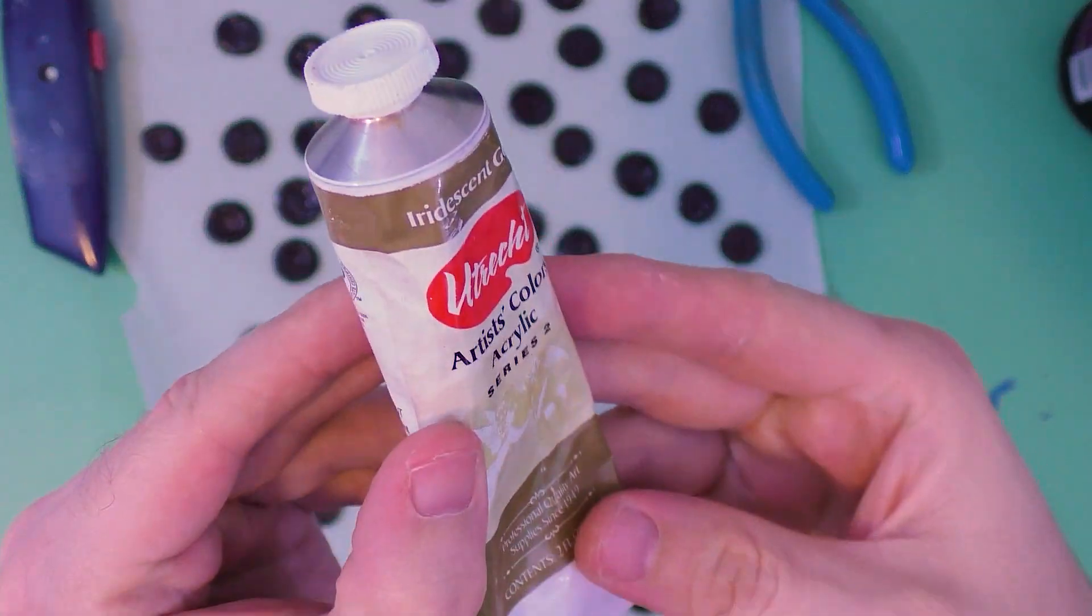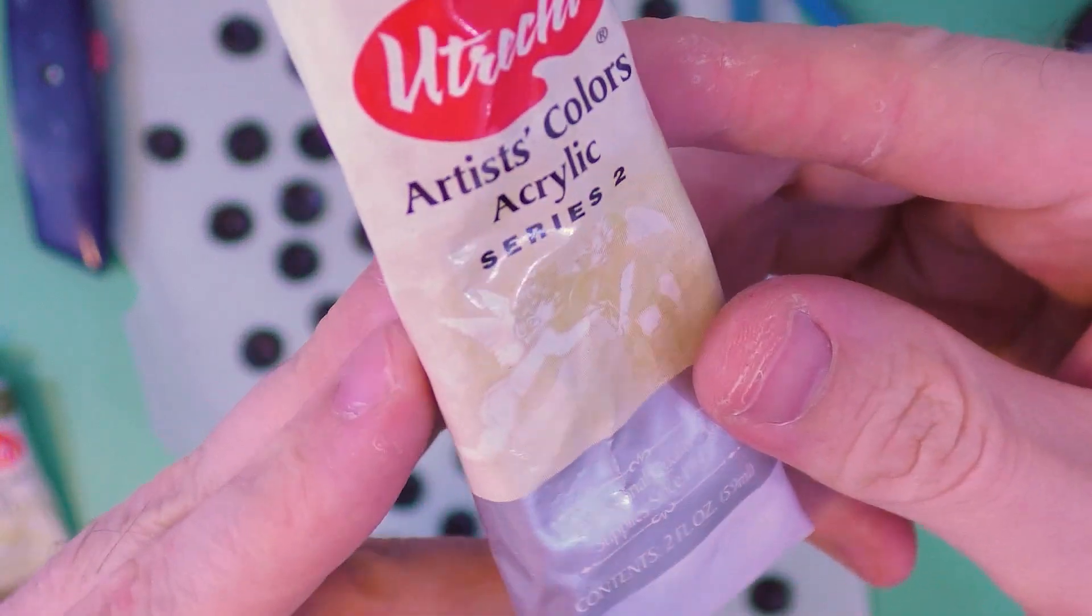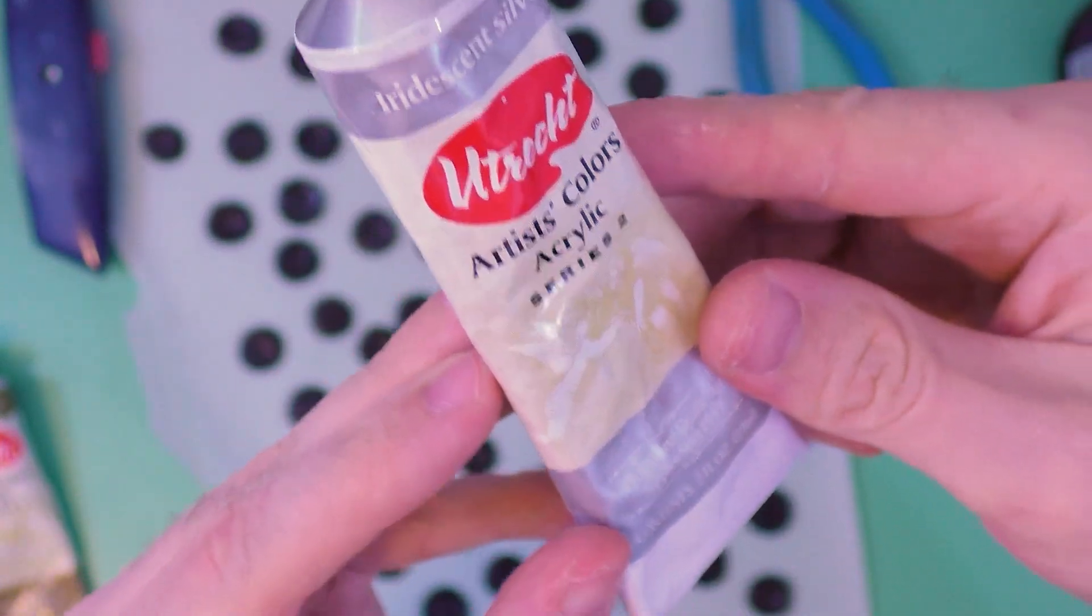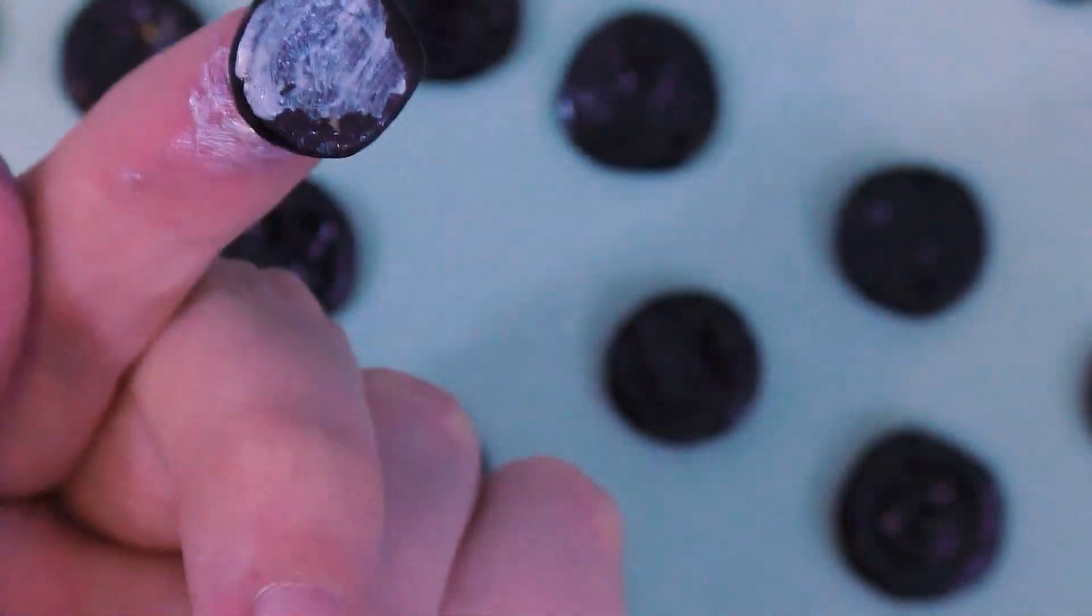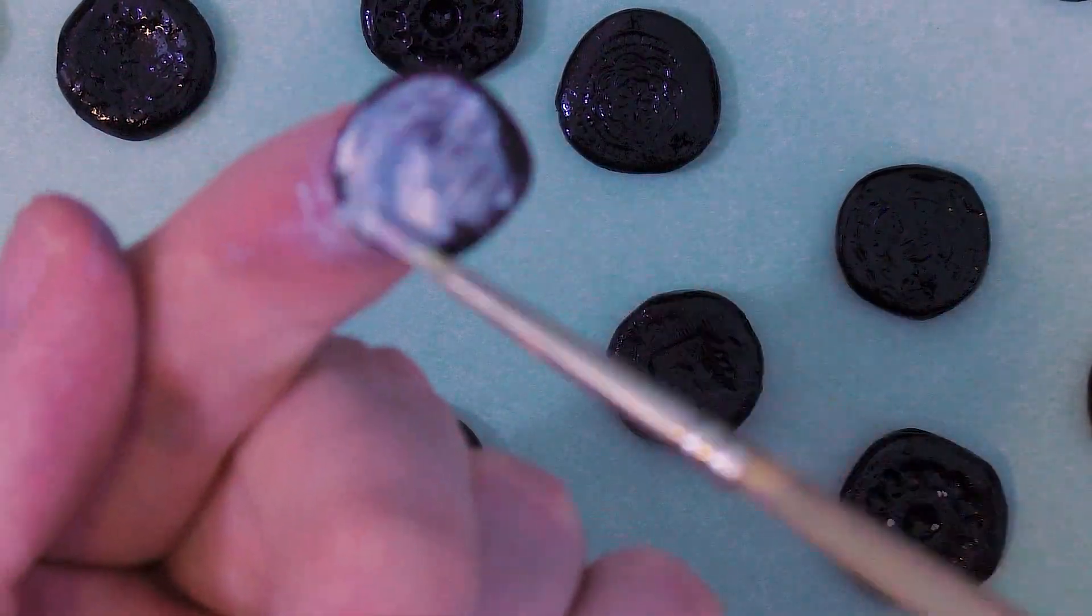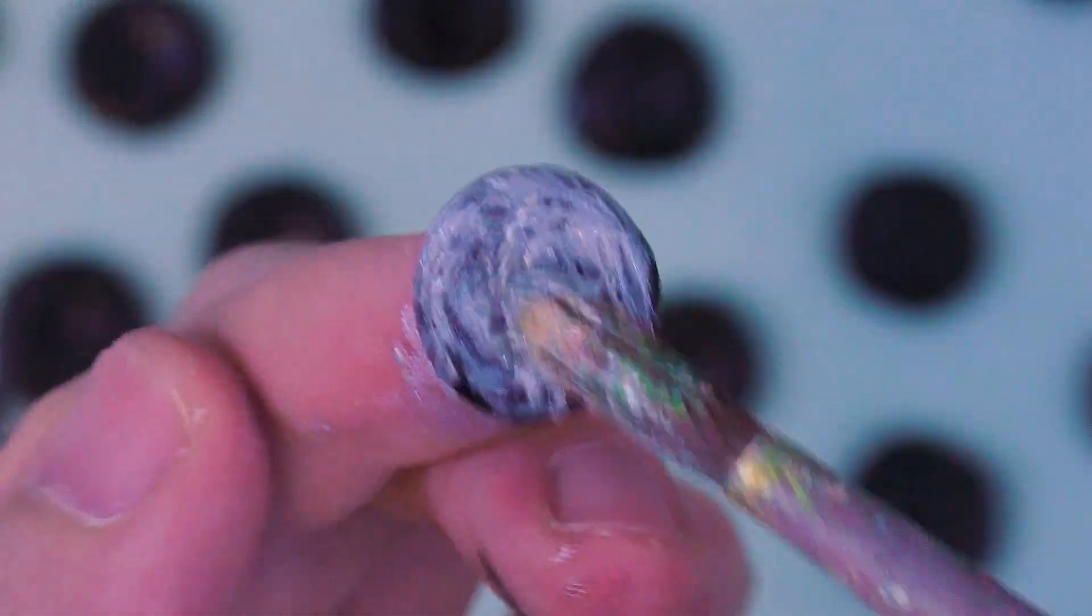Once the primer's dry, I have this gold and silver paint that I'm going to use to make these look like actual metal coins. I definitely could have gotten away with using a larger brush because you're not doing anything delicate. You're just covering the surface area of the coins.